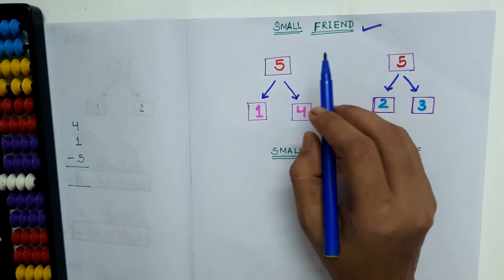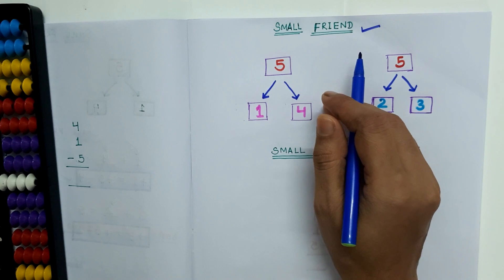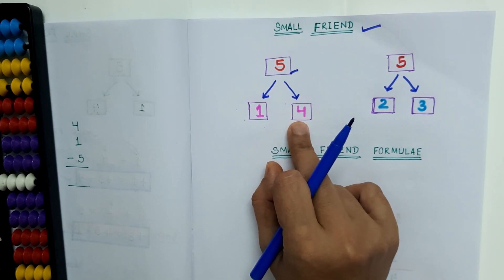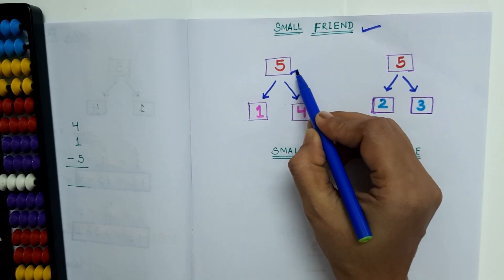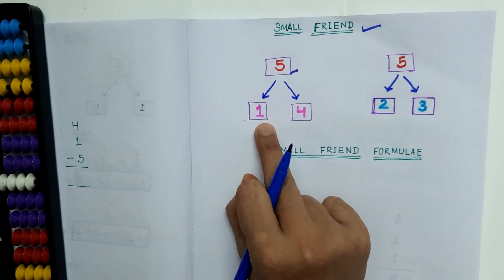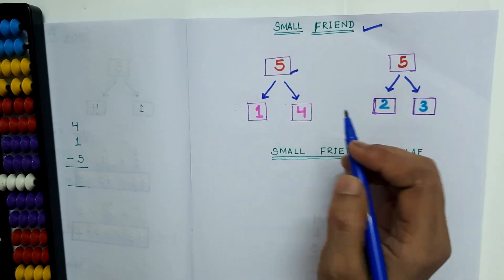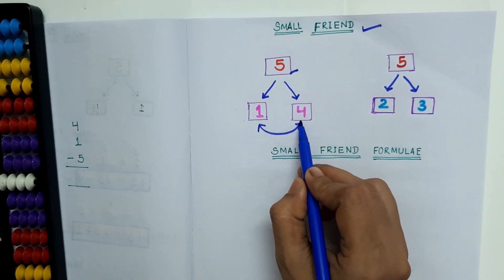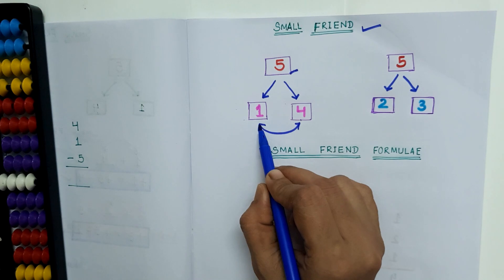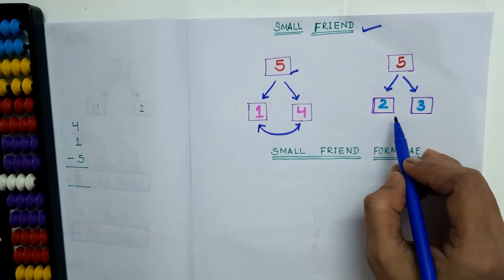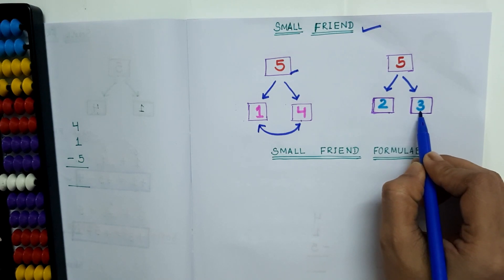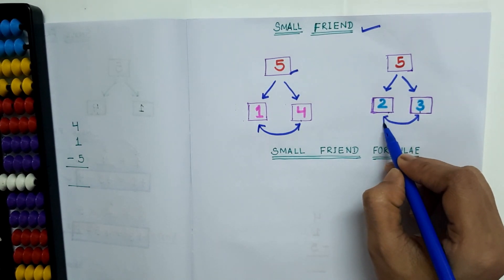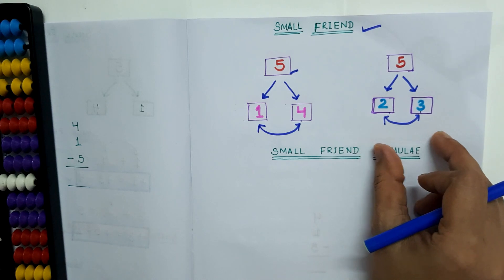What is small friend? Small friends are the numbers that add up to a total of 5, which means which two numbers we have to add so that we will get a total of 5. If we add 1 with 4, we will get the answer 5. So 1 and 4 are the small friends of each other — 1 is the small friend of 4, and 4 is the small friend of 1. We can also add 2 with 3 to get the answer 5. Here, 2 is the small friend of 3 and 3 is the small friend of 2. 2 and 3 are the small friends of each other.